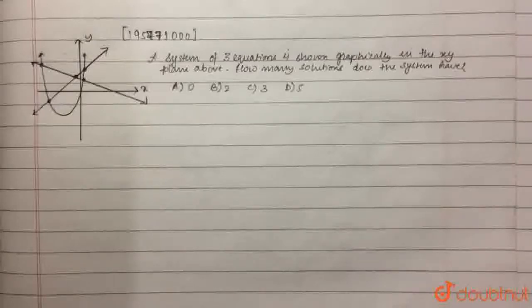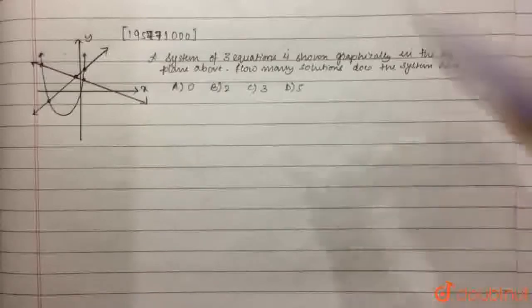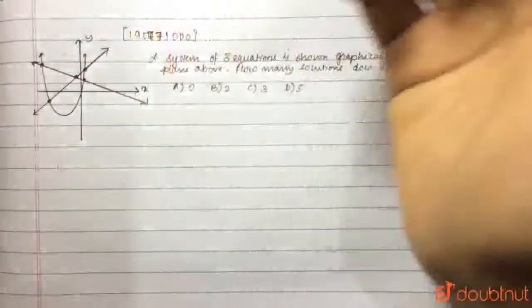So the system will have solutions only at those points where all the three functions or all the three equations will coincide. Now, do you see any such point in the graph where all the three equations or all the three graphs coincide, right?